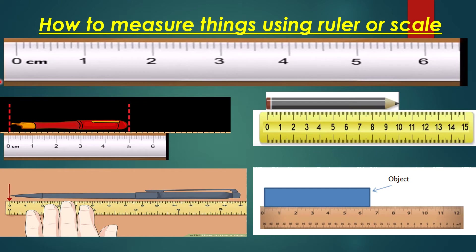Now let us learn how to measure things using a ruler. To measure the length of an object, place the zero mark of the ruler exactly along one end of the object. Align the object along the edge of the ruler, then note the mark on the ruler where the other side of the object ends. For example, to measure the length of a pen, put one end at zero and see where the other end falls. The other end of the pen lies on 5, so the length of the pen is 5 centimeters.